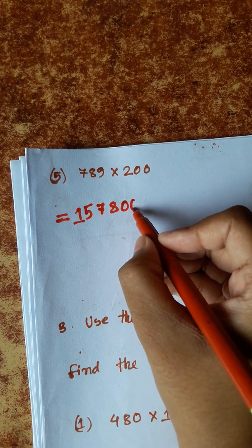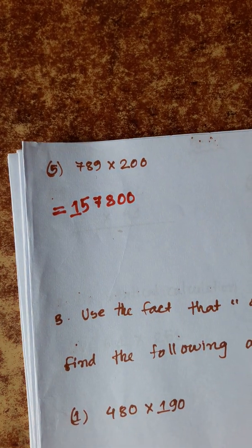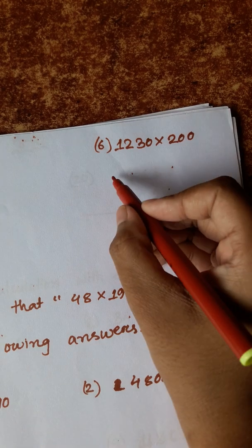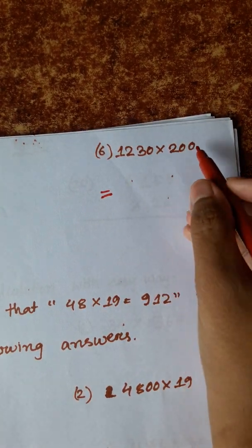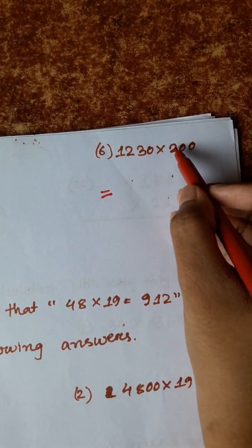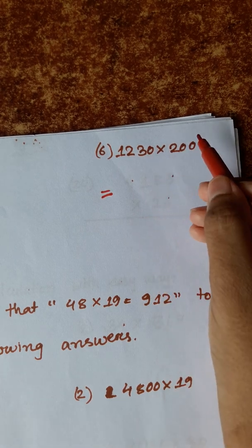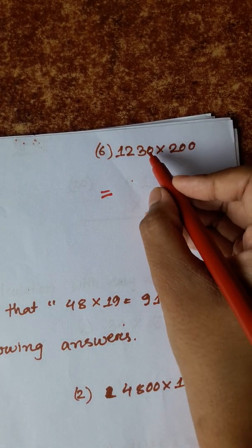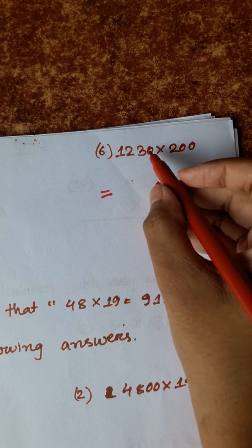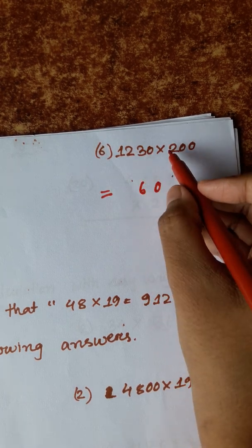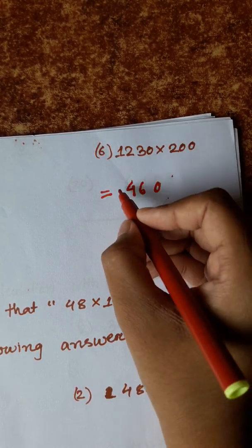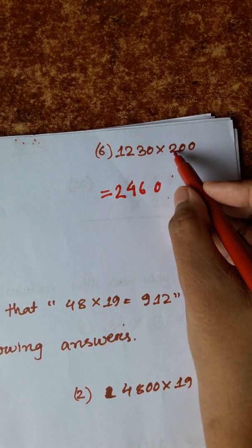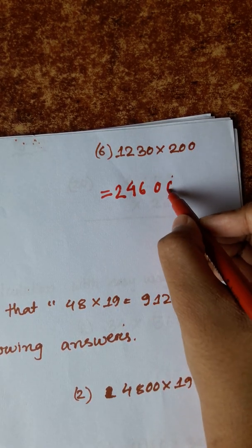এখন নিচে দুটো zero বসিয়ে দেব। আমাদের এই system-টা দেখি। আগে আমরা 2 দিয়ে এই পুরো number-টাকে multiply করে দেব, তারপর এই 00 পাশে বসিয়ে দেব। So: 2 0s are 0, 3 2s are 6, 2 2s are 4, 2 1s are 2। পুরোটার সাথে যেটা multiply করা হয়েছে তার পাশে যে দুটো zero সেটা বসিয়ে দেব।